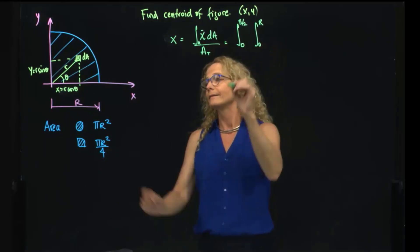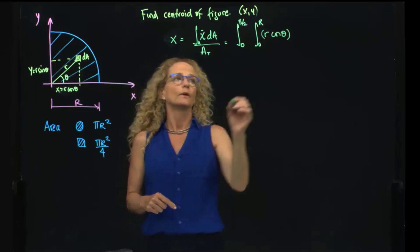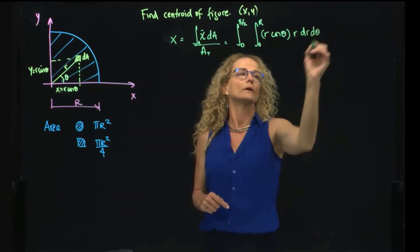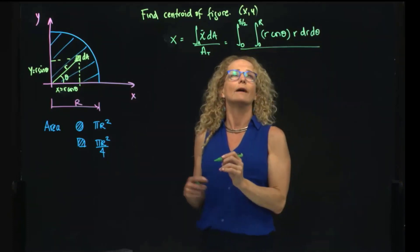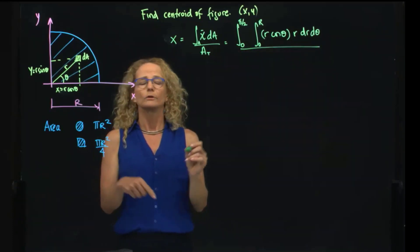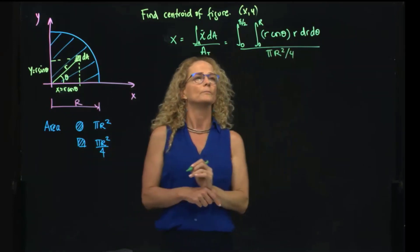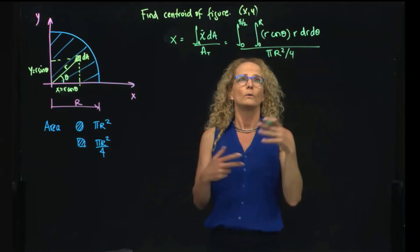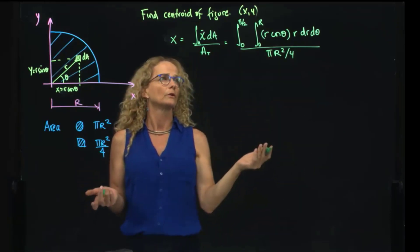And then x, I already wrote that is r cosine of theta, and my differential of area will be r dr dtheta, or dr dtheta. And all that divided by my total area, which is pi r squared over 4. I can integrate those variables, first r or first theta, they are independent. So let me integrate first by r.